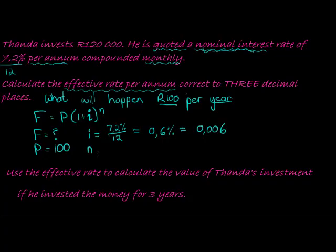If I divide it by another 100, that gives me 0.006. Now n is the number of times interest will be added - not just once.